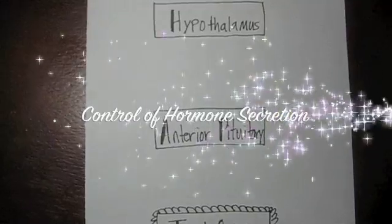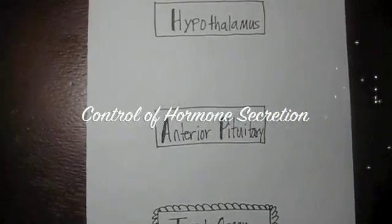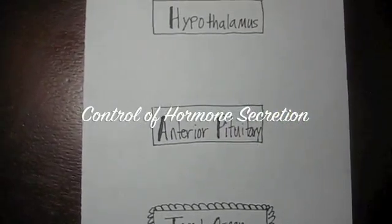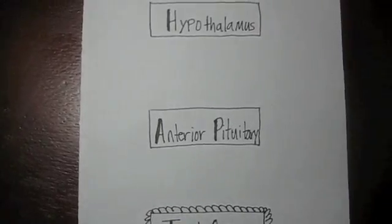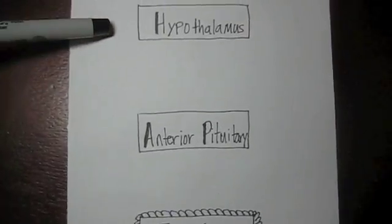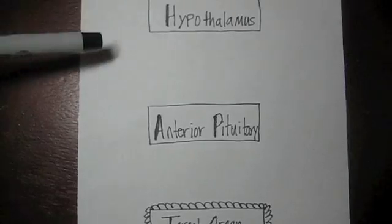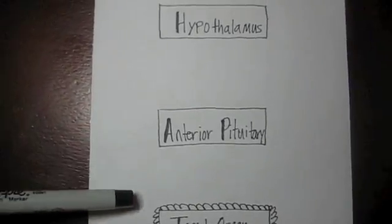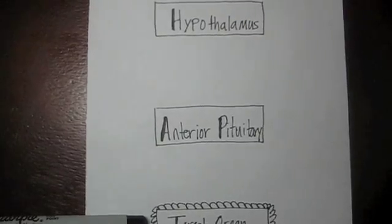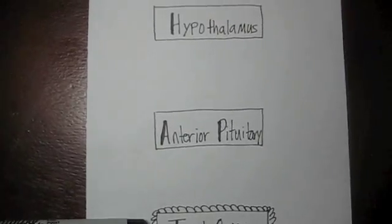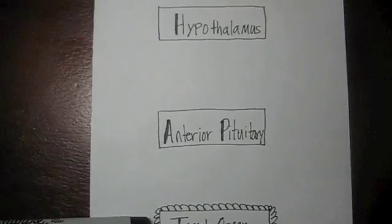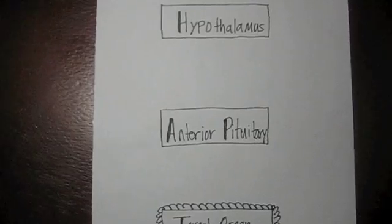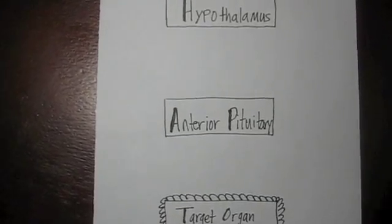The control of hormone secretion is concentrated on three main areas: the hypothalamus, anterior pituitary, and its target organ, for which the hormone acts upon. The target organ will vary from hormone to hormone, as we'll see in the upcoming details.